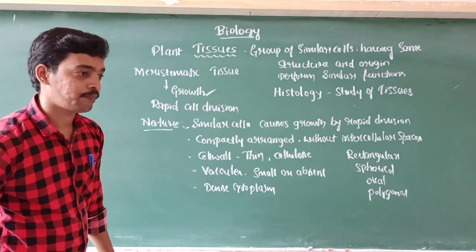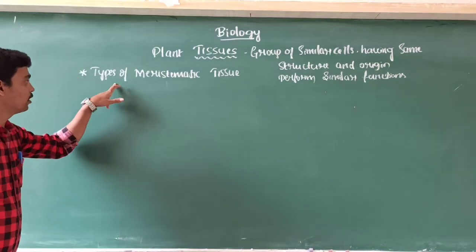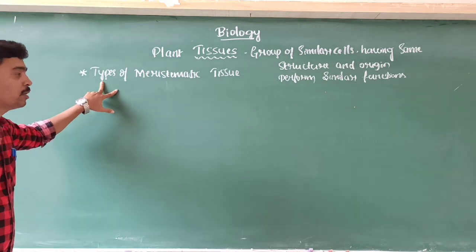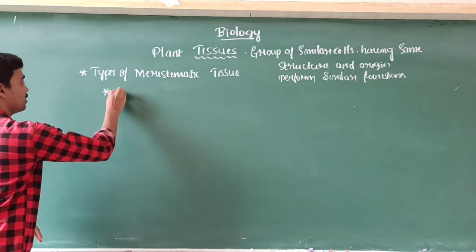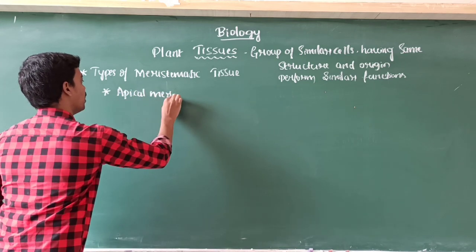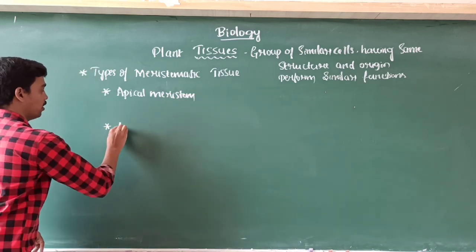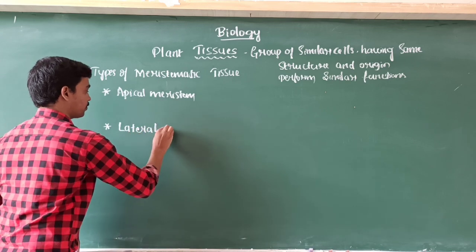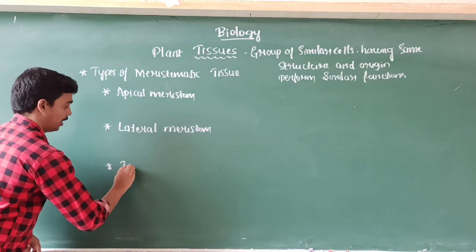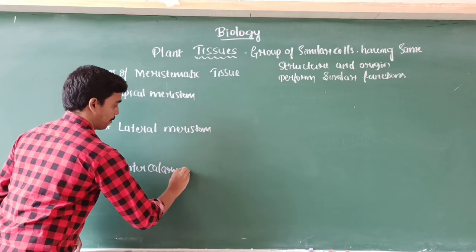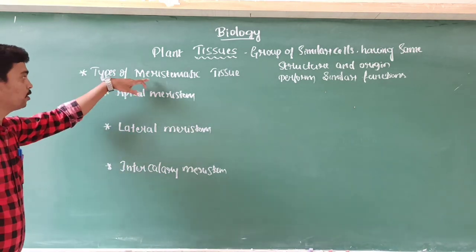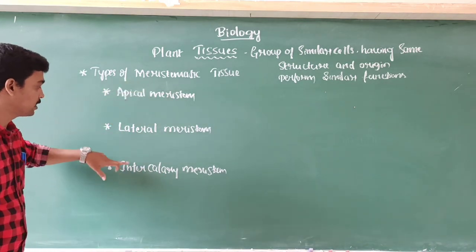The types of meristematic tissue are: first, apical meristem; second, lateral meristem; and third, intercalary meristem. These are the three types of meristematic tissue.